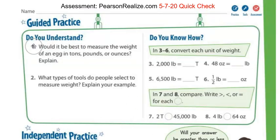So on number one, it says, would it be best to measure the weight of an egg in tons, pounds, or ounces? So this is thinking kind of about what a ton, a pound, and an ounce might be used to measure. So like I was saying before, a ton is going to be that really heavy weight. So think about cars or large animals, such as an elephant. Those are going to be something that you would measure in tons.